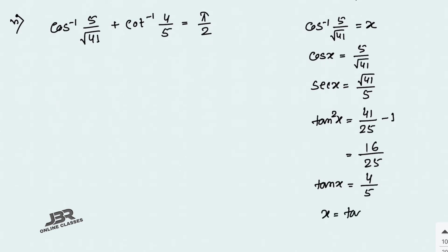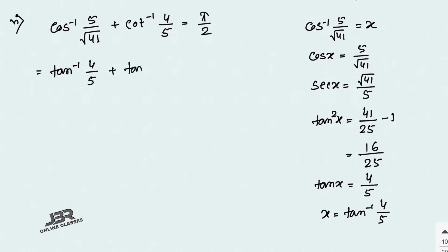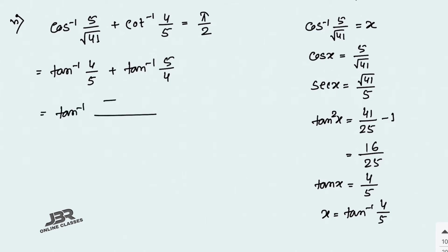So the first term becomes tan⁻¹(4/5). Now convert cot⁻¹ to tan⁻¹ using cot⁻¹(x) = tan⁻¹(1/x), so cot⁻¹(4/5) = tan⁻¹(5/4). Now apply the tan⁻¹(x) + tan⁻¹(y) formula: numerator = 4/5 + 5/4; denominator = 1 − (4/5)(5/4) = 1 − 1 = 0.